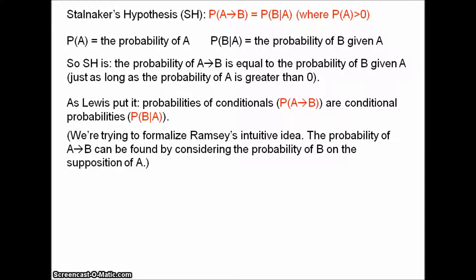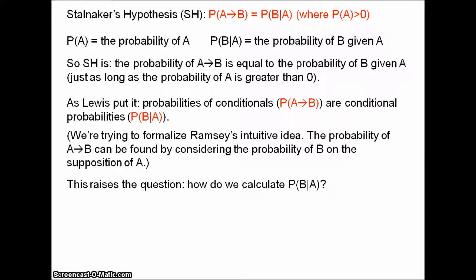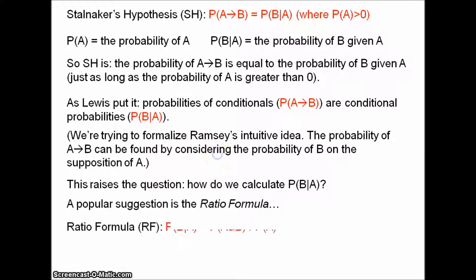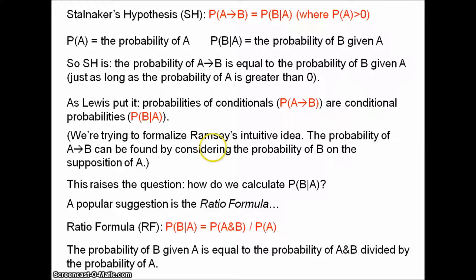What we're trying to do here is formulate Ramsey's intuitive idea. The probability of 'if A then B' can be found by considering the probability of B on the supposition of A. This raises the question: how do we calculate the probability of B given A? A popular suggestion is the equation known as the ratio formula.